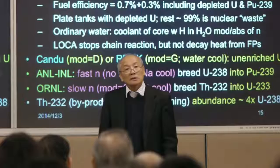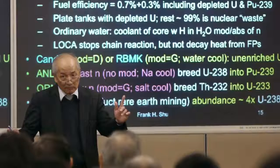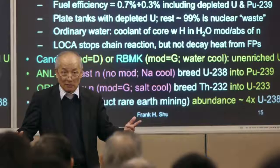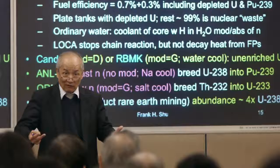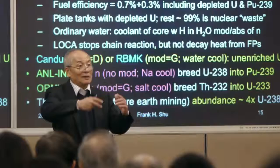Thorium-232 is a by-product of rare earth mining and is about four times as abundant as uranium-238. If we stick with light water reactors using only 1% of uranium, high-quality uranium may last only about ten years. If you breed plutonium, that's a factor of a hundred — about a thousand years. If you use thorium, it's four thousand years — almost the age of human civilization. We'd better have fusion by then, otherwise we should kick all the plasma physicists out of university.